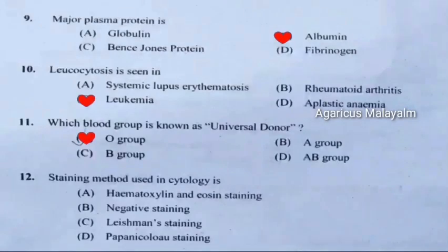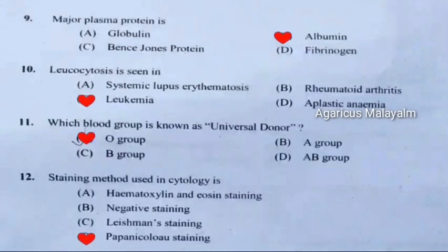Twelfth question: Staining method used in cytology is. Correct answer is Option D: Papanicolaou staining.